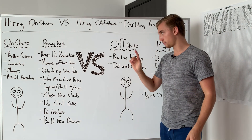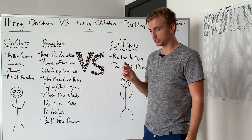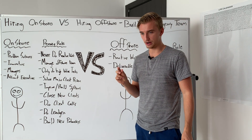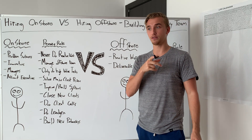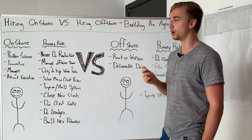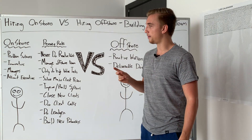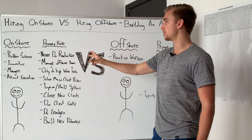Offshore is when you're hiring somebody who is typically paid between $2 to $5 per hour, or even $8 per hour, because the country they live in is more of a third world country — like the Philippines or India — where you can find really smart people but at cheaper rates. So let's talk about onshore first.